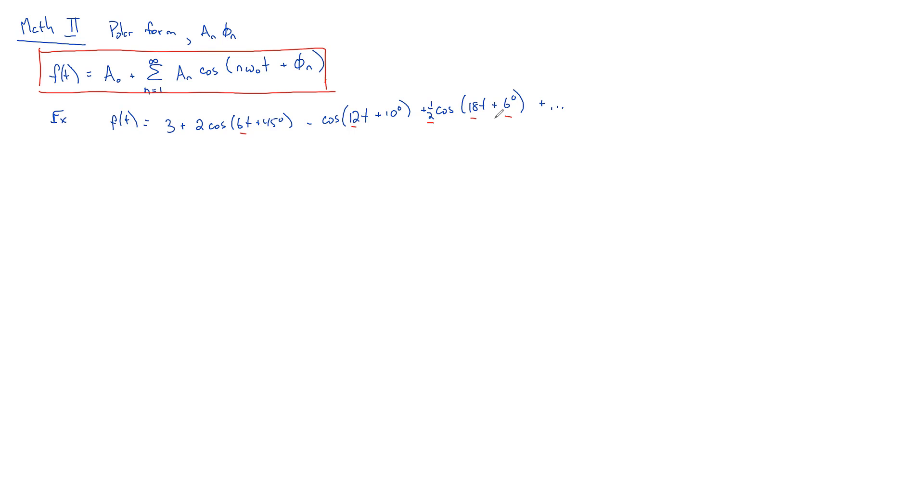problem is that you can't compute the A sub Ns and the phi sub Ns directly. So if you want to use that form, the way to go back and forth is to first compute your A sub Ns and B sub Ns as in the previous slide.